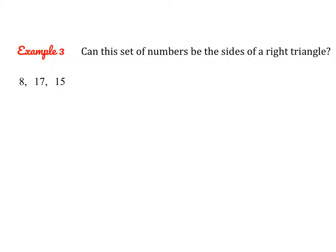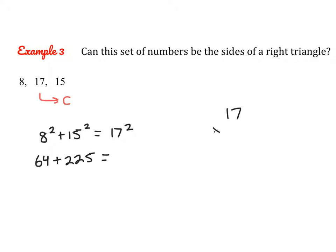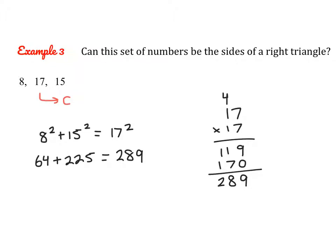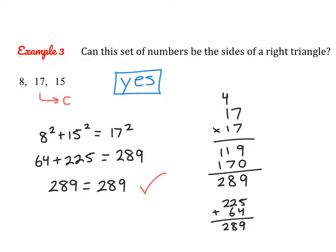They're asking: can this set of numbers be the sides of a right triangle? I look at the three numbers and test them using the Pythagorean Theorem. I know that 17 is the C value because it's the largest number. So let's plug it in: 8 squared plus 15 squared equals 17 squared. Simplifying, 17 times 17 gives us 289. Adding the left side, we get a true statement — 289 equals 289. Since the Pythagorean Theorem works, yes, these numbers can be the sides of a right triangle.